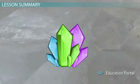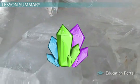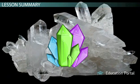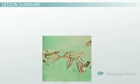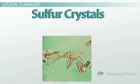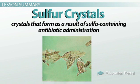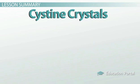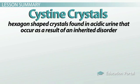Hopefully this lesson was fun in terms of shapes and informative at the same time. Let's review the crystal shapes, names, and problems associated with their formation. If you see shocks-of-wheat or needle-fan-shaped crystals, then you should think about sulfur crystals — crystals that form as a result of sulfa-containing antibiotic administration. However, if under the microscope you observe hexagon-shaped crystals, then your mind should be swayed towards cystine crystals, which are associated with an inherited disorder and are typically found in acidic urine.